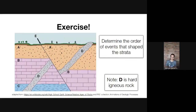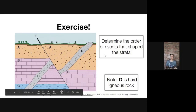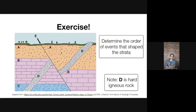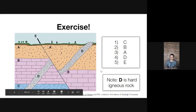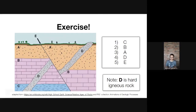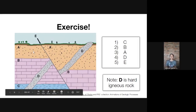Here's another exercise: determine the order of events that shaped the strata, noting that D is a hard igneous rock. Try to solve it on your own first. The correct order is: C formed first, then B, then deposition of A, then the cross-cutting of D, and finally the faulting by E — which cuts across all four other layers.